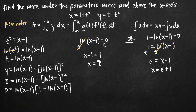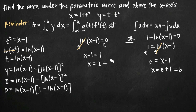These are going to be our limits of integration a and b. Since e to the first power is roughly 2.7, e plus 1 is approximately 3.7, which is greater than 2. So e plus 1 is our upper limit b, and 2 is our lower limit a.